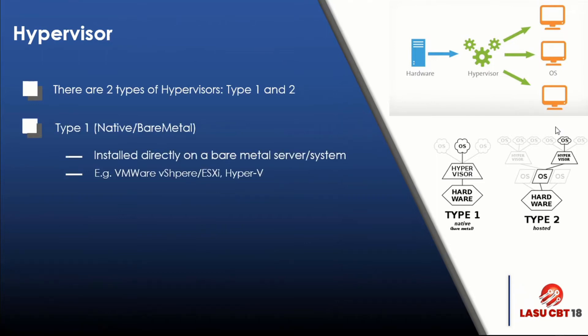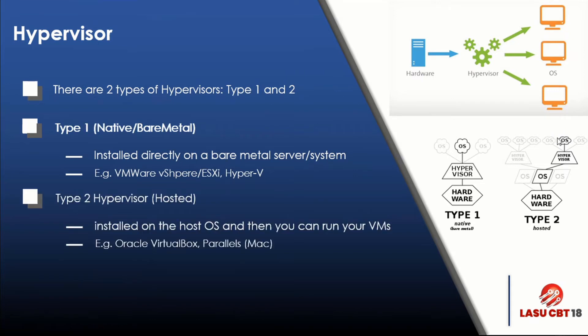What is a hypervisor? A hypervisor helps us manage and run one or more virtual machines on a computer. There are two types: the Type 1 hypervisor, also known as the native or bare metal hypervisor, which is installed directly on the server itself. Good examples include Hyper-V and VMware vSphere. For Type 2, also known as the hosted hypervisor, it is installed on the host operating system, from which you run your VMs.